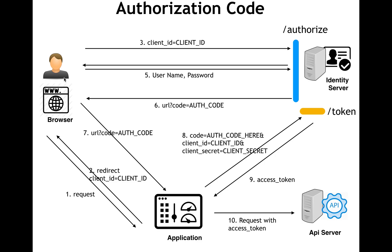Let's see the entire flow. The user makes a request to the application, which is redirected to the identity server. The identity server authenticates the user, and once authenticated, an authorization code is issued and redirected back to the application. With the authorization code, the application sends a request to the identity server including the authorization code and client secret. If the authorization code is valid and the client ID and secret are valid, an access token is issued.